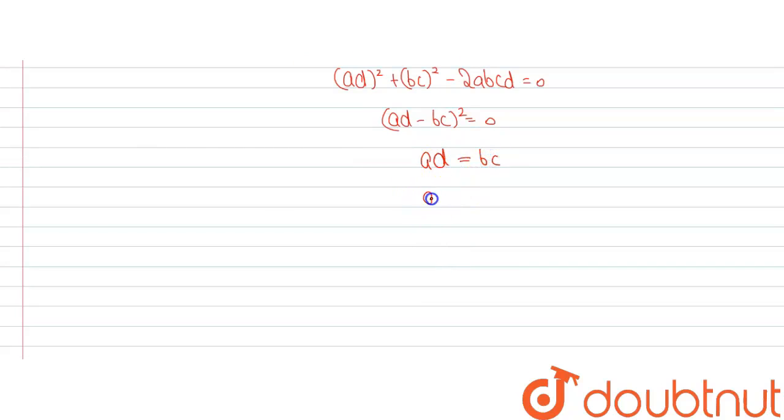So we can write a by c is equal to b divided by d, which means a ratio c is equal to b ratio d.